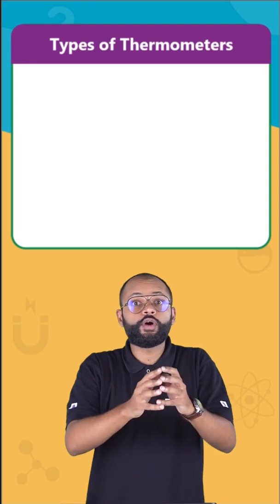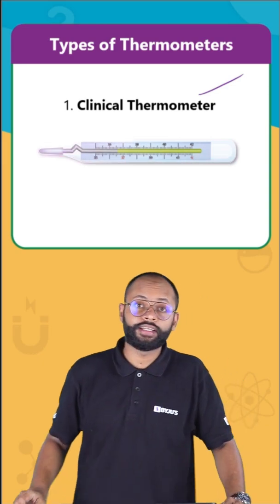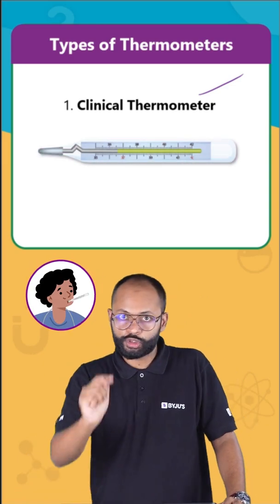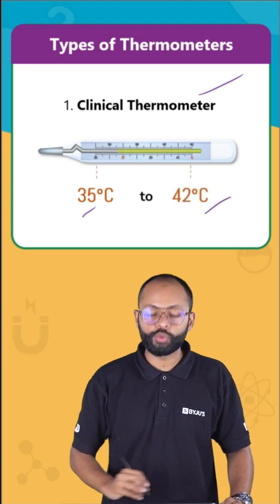Let's see the types of thermometers. First one is clinical, the one which the doctor uses to measure your body temperature. The range is 35 to 42 degrees Celsius.